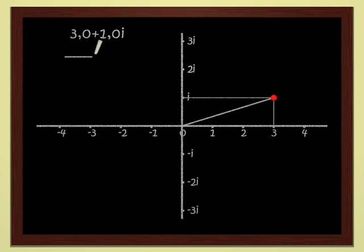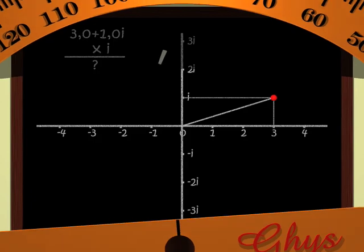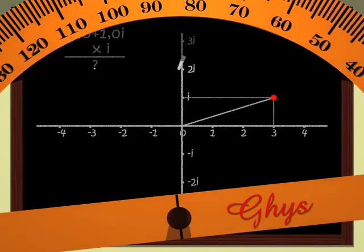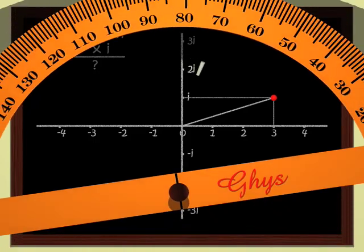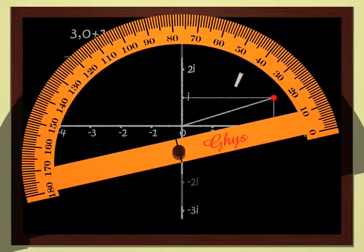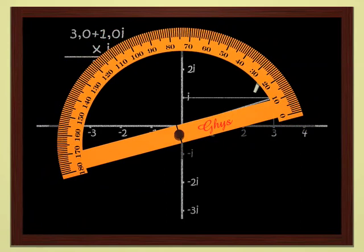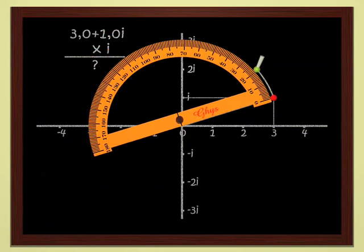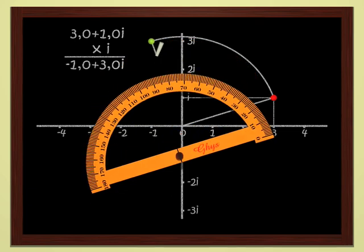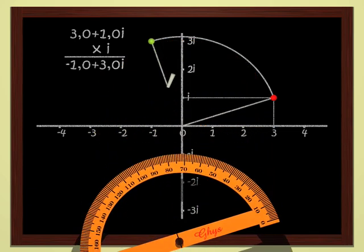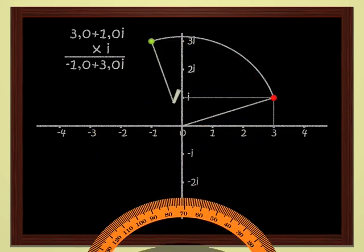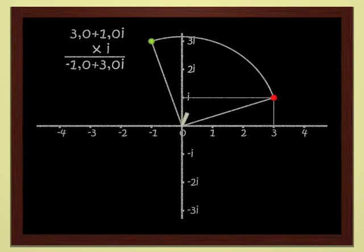Multiplying by i is not difficult either, since we know that i corresponds to a quarter turn. In order to multiply 3 plus i by i, we just have to rotate by a quarter turn. We get minus 1 plus 3i. Not so complicated, these complex numbers.